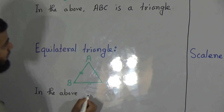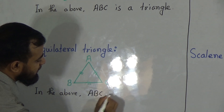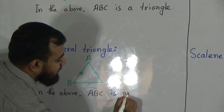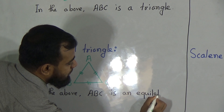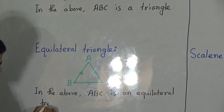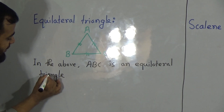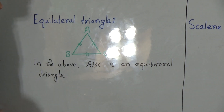In the above figure, A, B, C is an equilateral triangle. My dear students, I am repeating again: an equilateral triangle has all sides equal to each other. So this triangle will be an equilateral triangle.